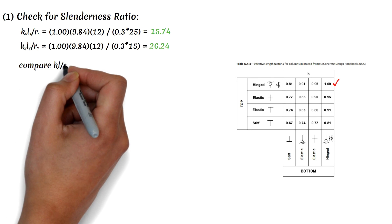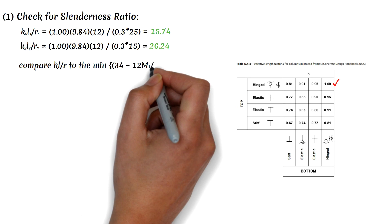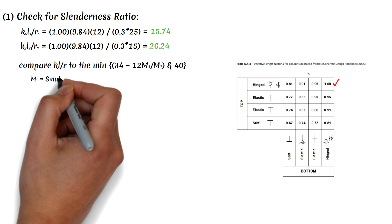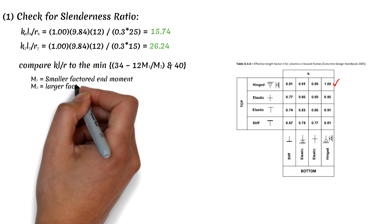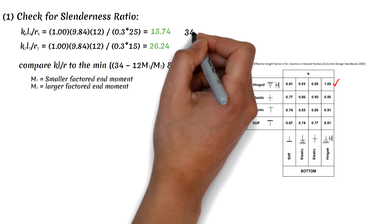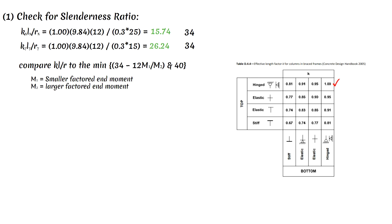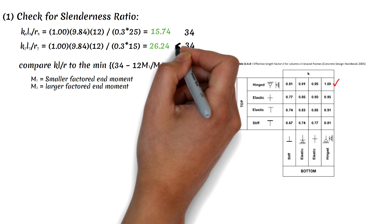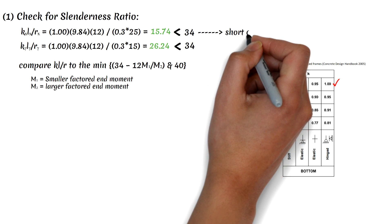We compare these slenderness ratios to the minimum of 34 minus 12 times M1 over M2, and 40, where M1 is the smaller factored end moment (positive for single curvature, negative for double curvature) and M2 is the larger factored end moment, always positive. Assuming M1 over M2 equals 0, we get 34. Since both 26.24 and 15.74 are less than 34, we have a short column.